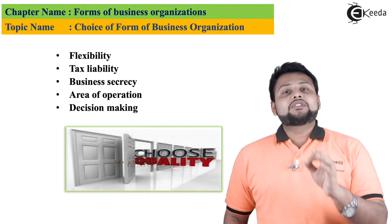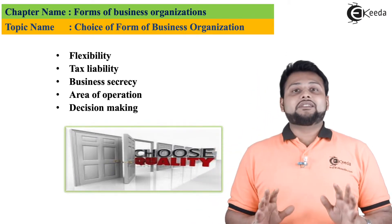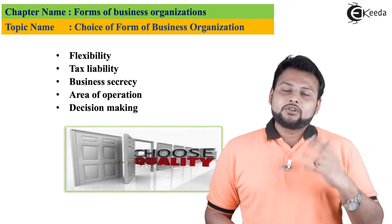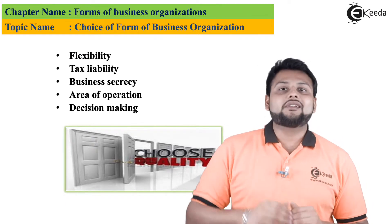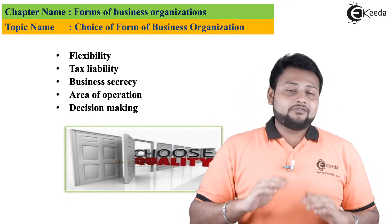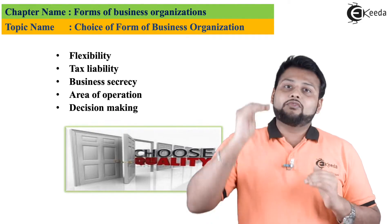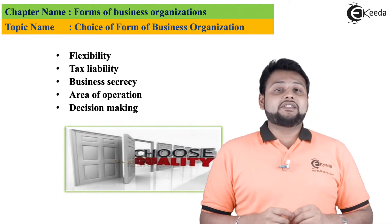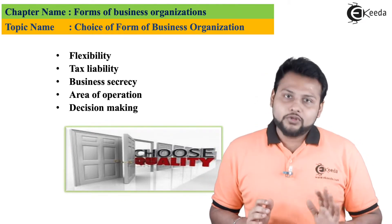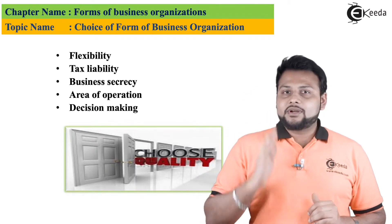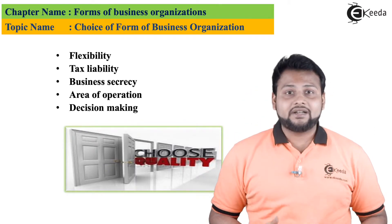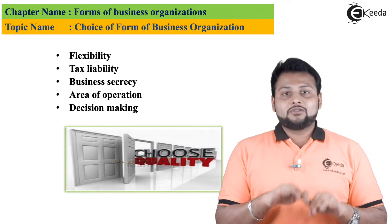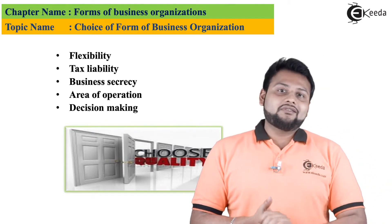Business secrecy is another consideration. If you need to keep your business secrets protected, go for sole proprietorship — the sole trading concern. If you don't need to maintain secrecy, go for the company form of organization. For mid-level secrecy needs, go for partnership. In a company, government regulations require transparency with investors and shareholders, making it hard to maintain secrecy.